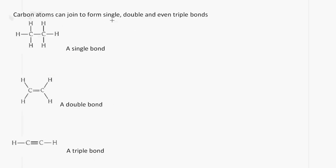Carbon atoms can also form single, double, or even triple bonds. In this case we have a carbon-to-carbon single bond — we have one bond here. In this example we have a carbon-to-carbon double bond — two bonds between the carbon atoms. We can also form a triple bond, in which case we have three bonds between the carbons. What you need to remember is that carbon is able to form four bonds around itself.